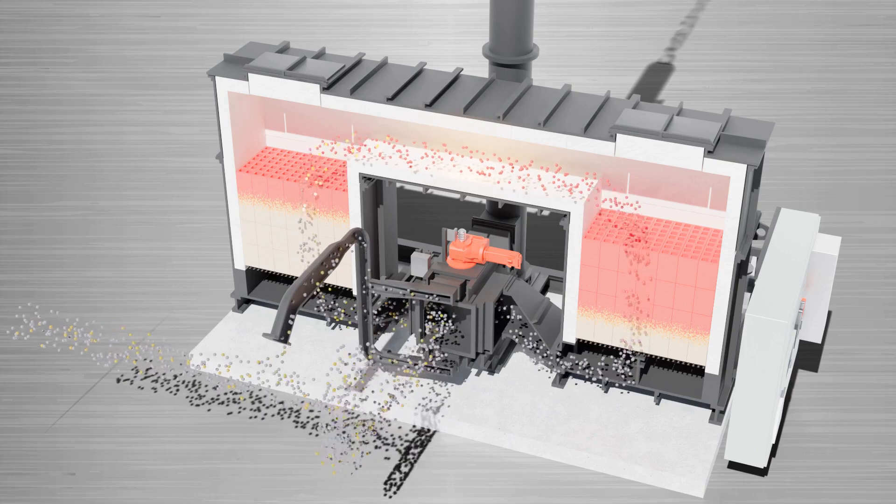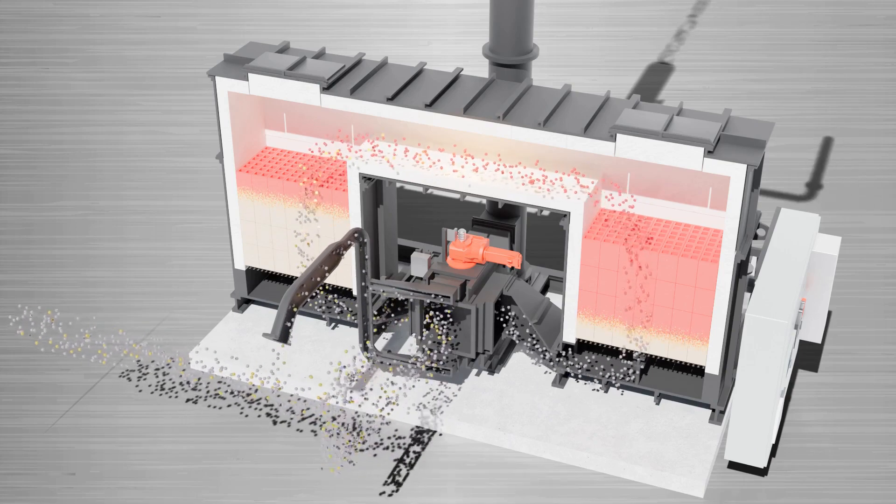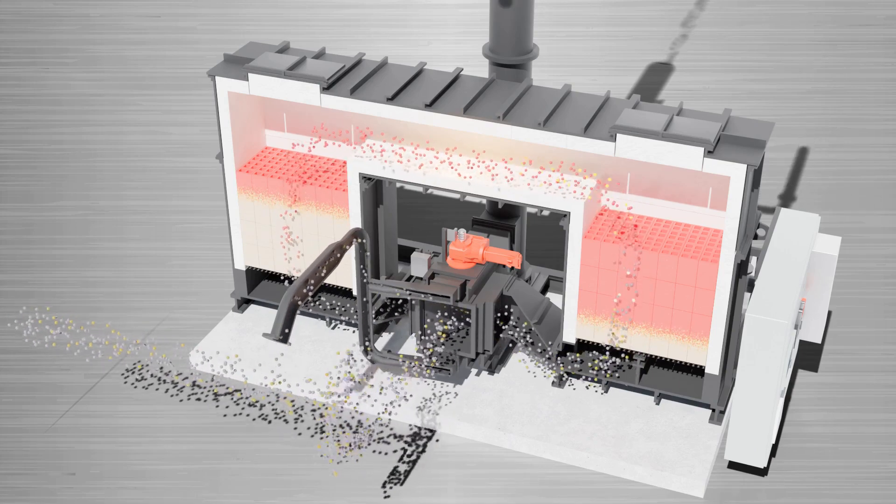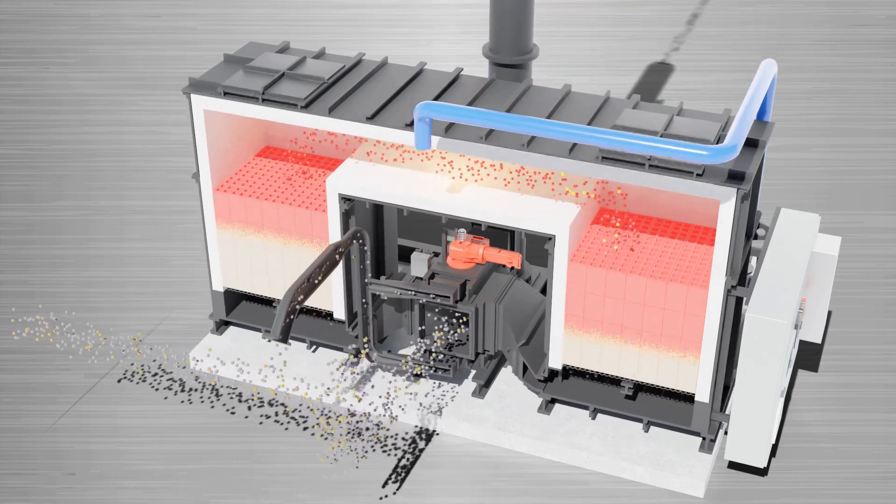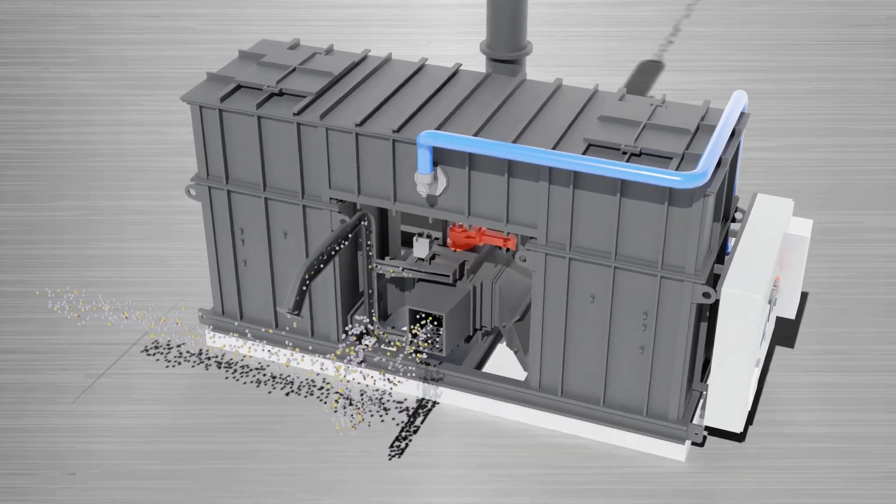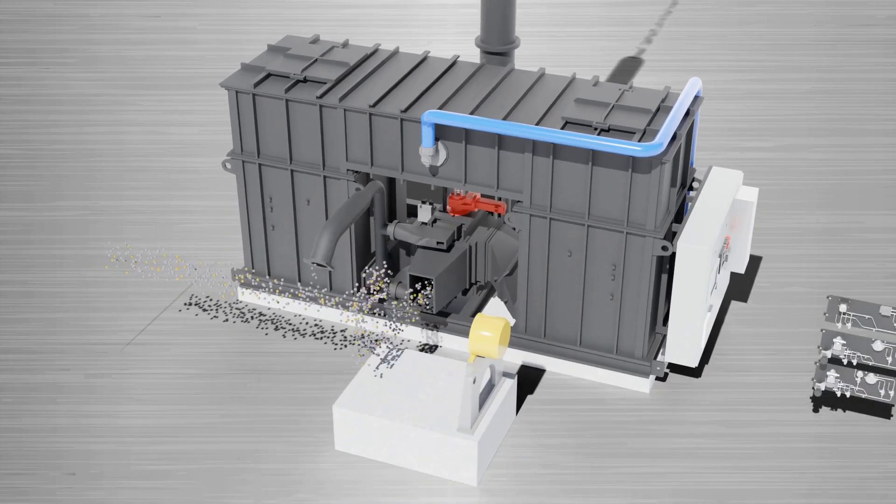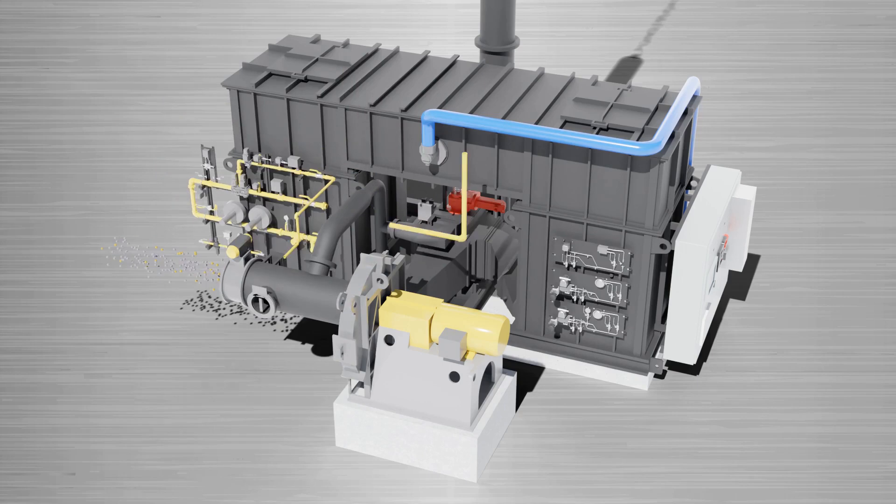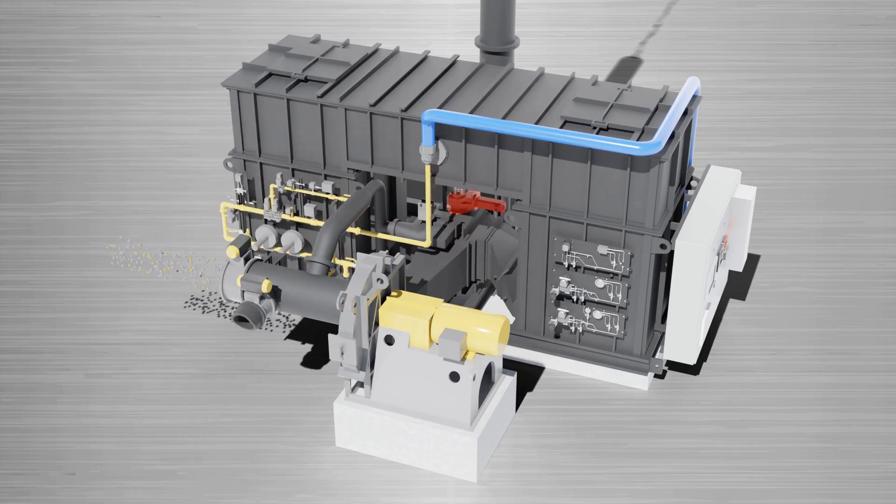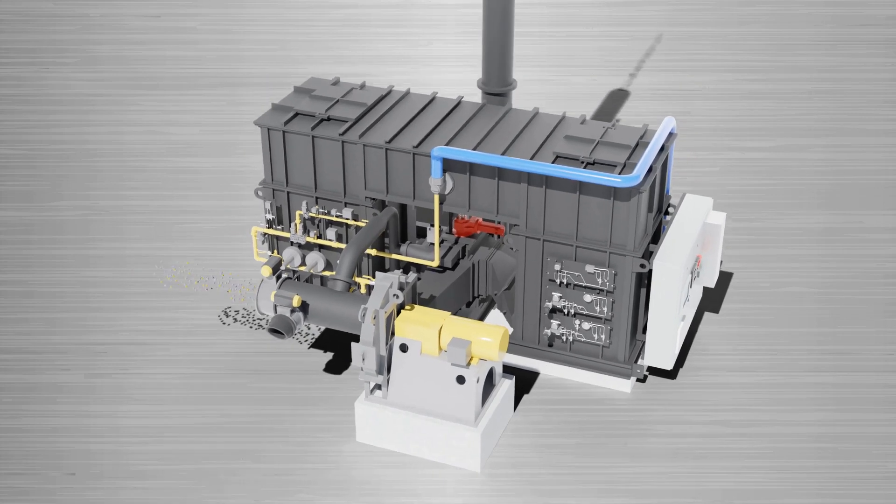This concludes the basic operation of PCC's regenerative thermal oxidizer. The system can achieve high destruction performance of organic emissions from a wide variety of production processes with very low fuel consumption. In addition to the base RTO, add-on systems to be discussed next extend the RTO's capabilities and performance. These are the hot gas bypass and puff capture systems.